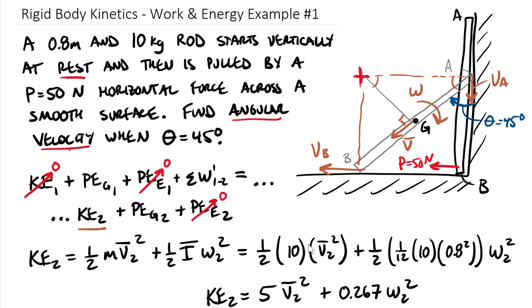Figuring out the distances, if the hypotenuse, the overall length of this slender rod, is 0.8 meters, then vertically this is 0.8 times cosine of 45, and this distance would be 0.8 times sine of 45 degrees. That gives us some geometry to work with.